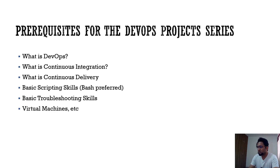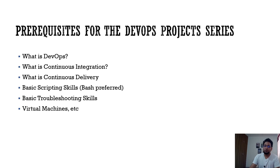You also need to know about virtual machines, virtual networks, and virtual storage. If not, we'll talk about that as well. All these things — DevOps, CI, CD, the scripting part, and basic troubleshooting skills — we're going to dedicate one or two videos for that so that you can at least have a basic knowledge of what exactly we are going to do in this DevOps project series.